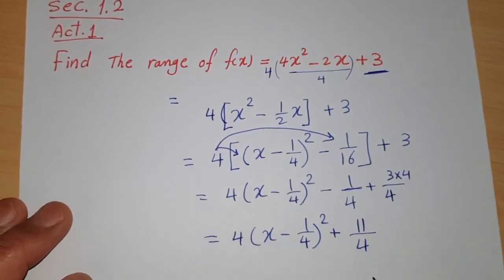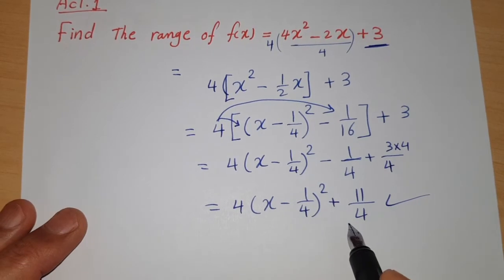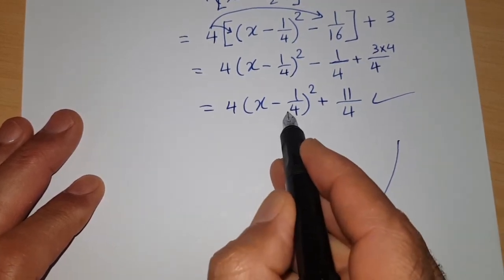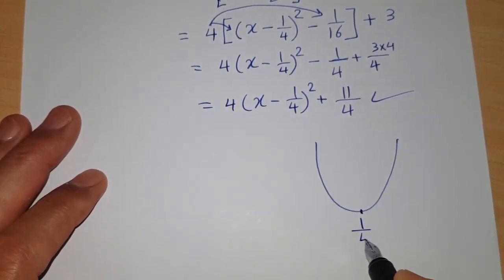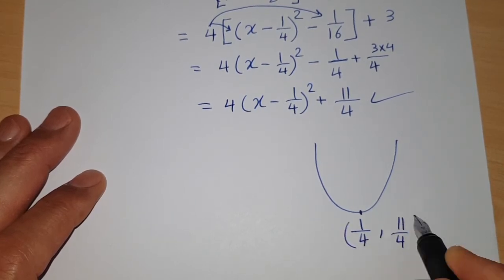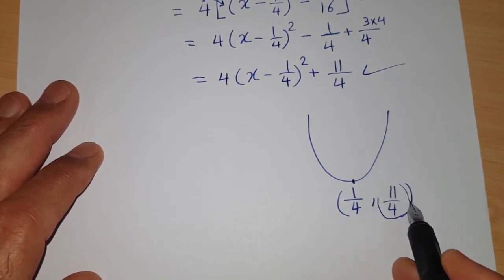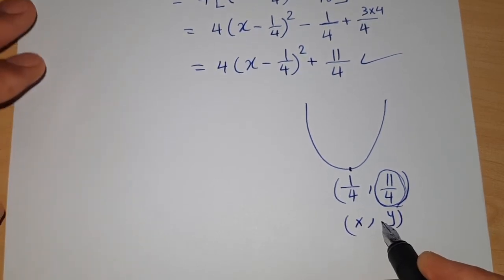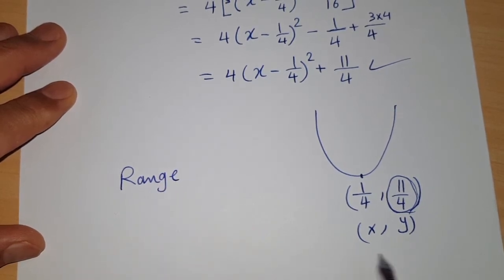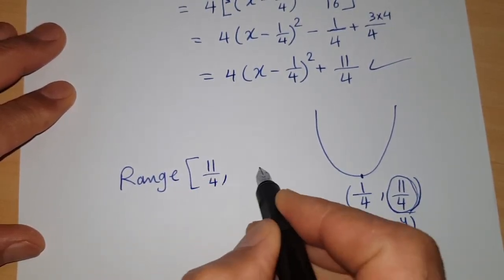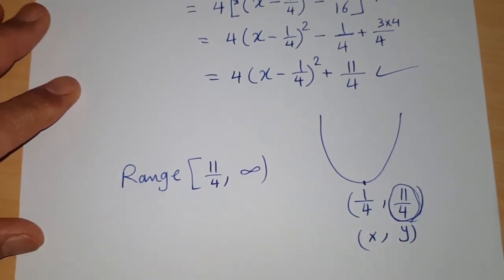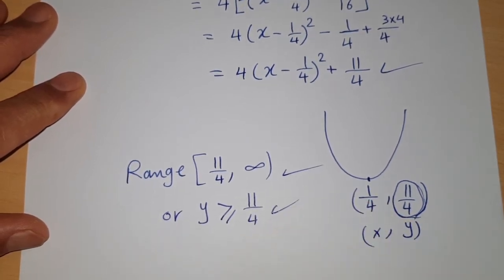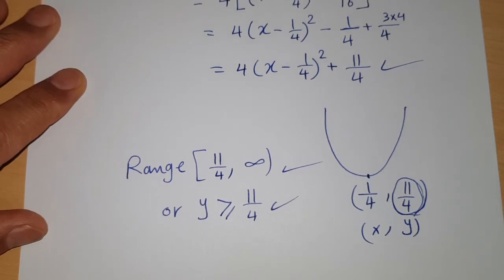The canonical form is 4(x - 1/4)² + 11/4. The coefficient is positive so the function opens upward, and the vertex is (1/4, 11/4). The minimum value is 11/4, so the range is [11/4, ∞), or equivalently y ≥ 11/4.